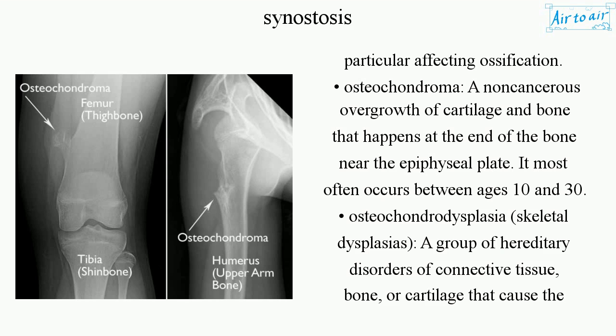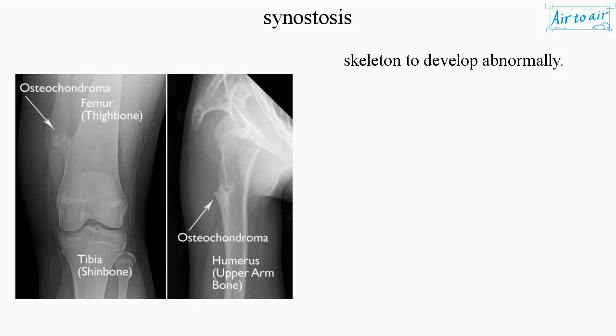Osteochondrodysplasia, or skeletal dysplasias, is a group of hereditary disorders of connective tissue — bone or cartilage — that cause the skeleton to develop abnormally.